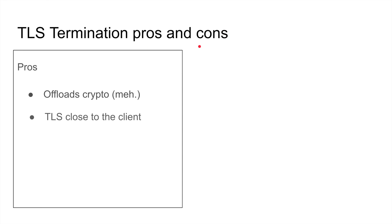Second pro: TLS closer to the client. The client could be in India while your API server is in West Virginia. Establishing a TLS 1.2 handshake over that distance — with four round trips — would be very slow. Instead, you install a proxy server in India and do TLS termination there, so you're geographically closer to the client. You can co-locate a proxy near your users for much better performance.